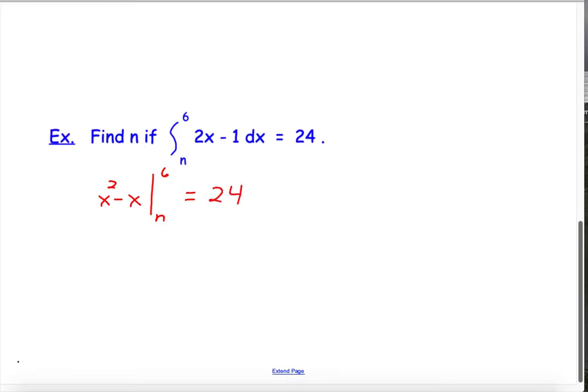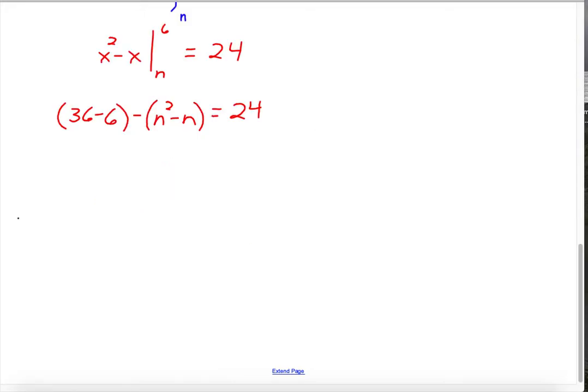So, first I'll plug in the 6, and we'll do 6 squared minus 6, and then minus, plug in the n, n squared minus n. Okay, so you can see that we're going to have a quadratic, which means we may have two solutions for this. So, when I simplify this, I get negative n squared plus n plus 30 equals 24.